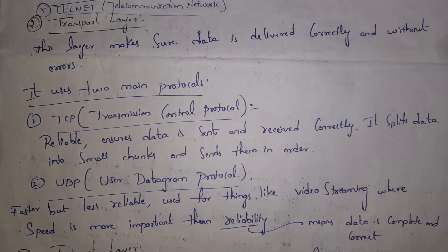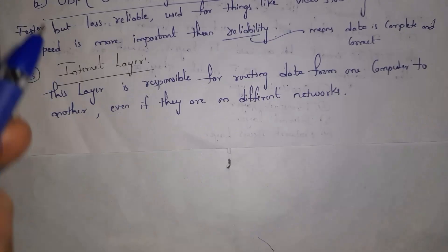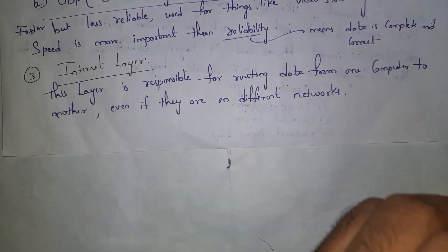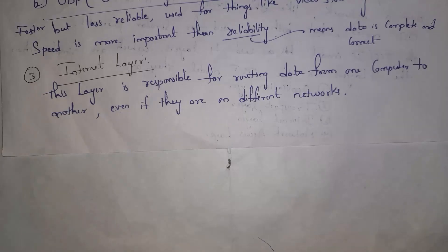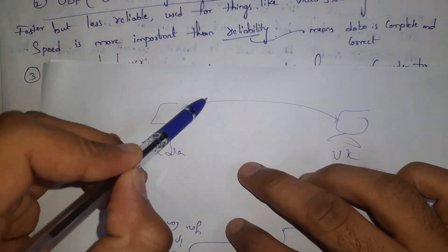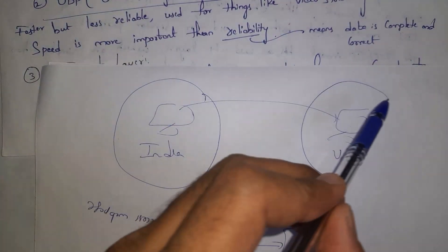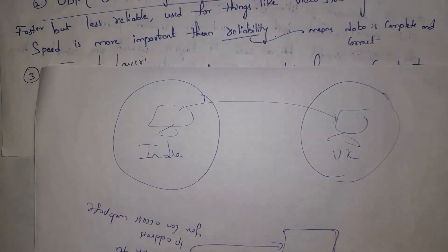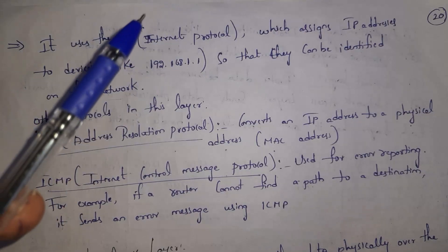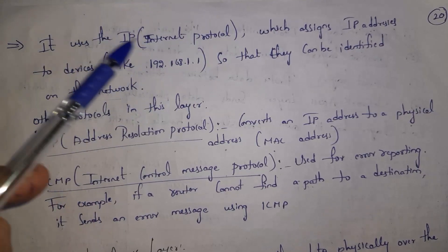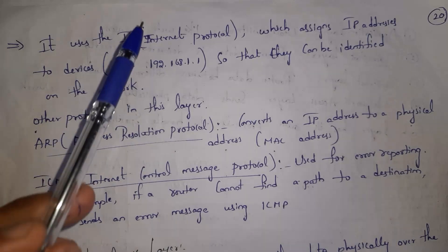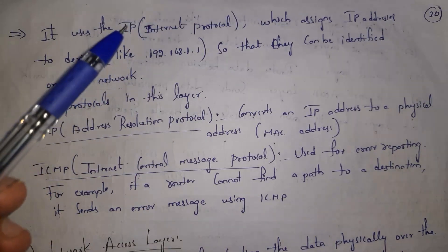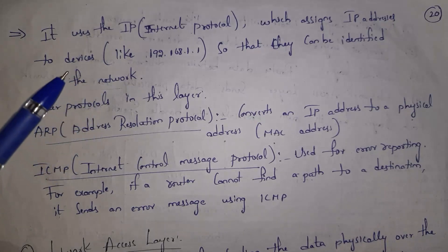The Internet Layer is responsible for routing data from one computer to another when they are on different networks. For example, my computer in India is one network and my friend's computer in the UK is another network — both networks can communicate with each other using the Internet Layer. The Internet Layer assigns an IP address (Internet Protocol address) to each device so that devices can be identified on the network.